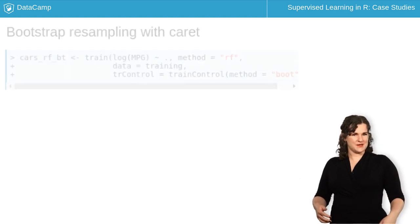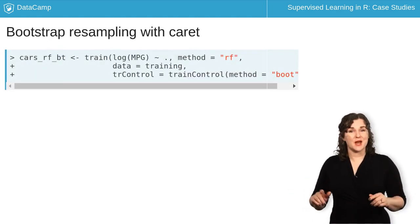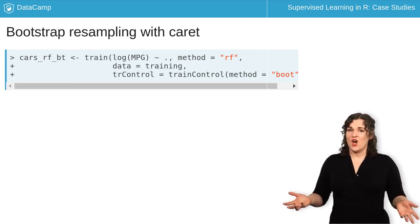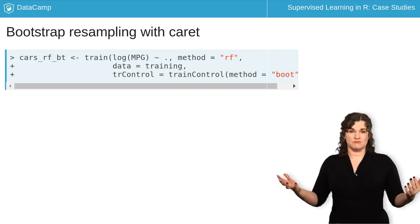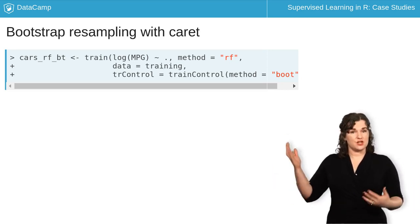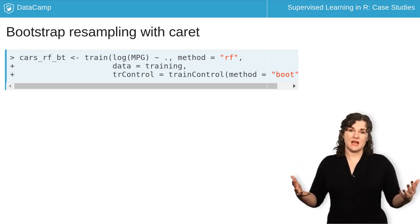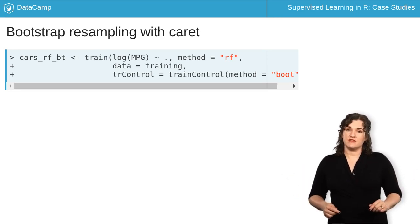I am very happy to be able to tell you that training a model with bootstrap resampling is pretty darn easy in caret. All you have to do is specify method equals boot in train control, like you see here. The default behavior is to do 25 bootstrap resamplings, but you can change this if you want to.